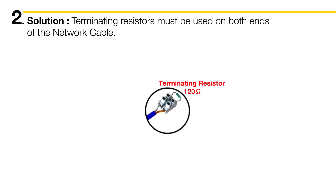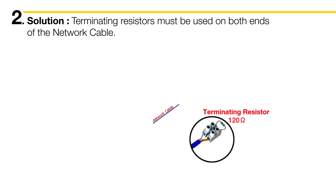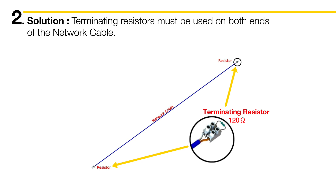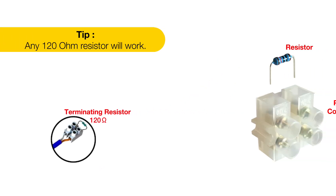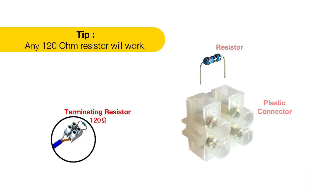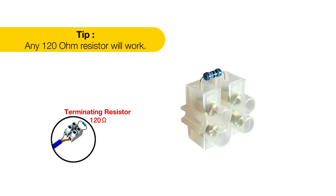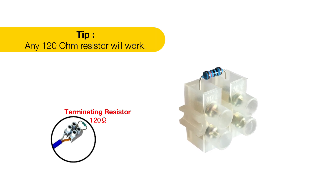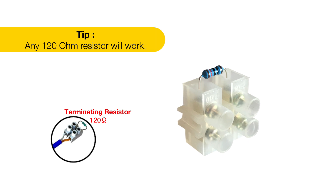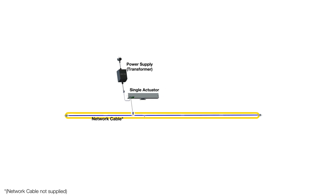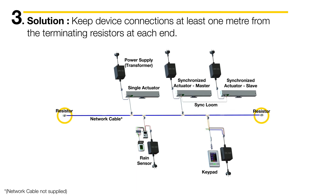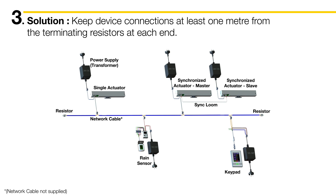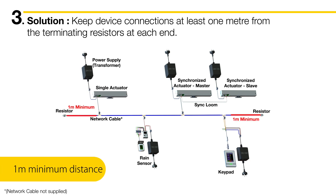The second issue you might find with the network cable is incorrect application of the terminating resistors. The Elevation system uses bus communication, so you must have a terminating resistor installed on each end of the network cable. These are critical for completing the data circuit and enabling communication to flow through the network. If you've lost the resistors supplied with the system, any 120 ohm resistor from an electronics store will do the trick. Test the resistors are 120 ohms before proceeding with the install — anything else will not work. All devices on the Elevation system tee off of the network cable between the two terminating resistors, and these connections can be anywhere along the network cable except within one metre from the terminating resistors at each end.